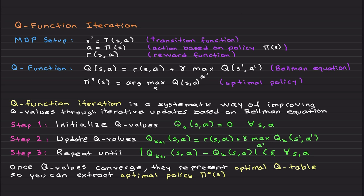The process continues until the Q values converge, at which point the optimal policy can be extracted. This is the Markov Decision Process setup — we have a transition function, a reward, an action based on a policy, and the reward function. The Bellman equation from the previous lecture is recursive since it depends on s-prime and a-prime, representing the next values of s and a, and we extract the optimal policy using argmax of the Q-function after it converges.